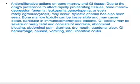Flucytosine has antiproliferative actions on bone marrow and GI tissue due to the drug's preference to affect rapidly proliferating tissue. Bone marrow repression includes anemia, leukopenia, cytopenia, or rarely agranulocytosis. Aplastic anemia has also been seen. Bone marrow toxicity can be irreversible and may cause death, particularly in immunocompromised patients. GI toxicity may be severe or rarely fatal and consists of anorexia, abdominal bloating, abdominal pain, diarrhea, dry mouth, duodenal ulcer, GI hemorrhage, nausea, vomiting, and ulcerative colitis.